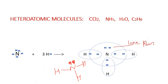The lone pair electron, children, we can represent by small 'l', small 'p'. Whereas the electrons which participate in the bond formation are known as bond pair electrons. You have learned today two new terms: lone pair electrons and bond pair electrons. In ammonia, there are three bond pair electrons and one lone pair of electrons.